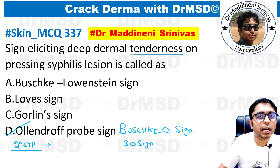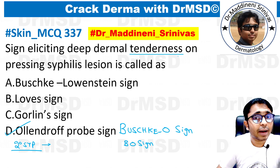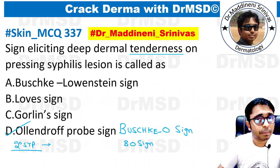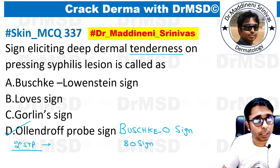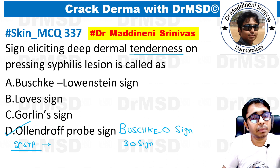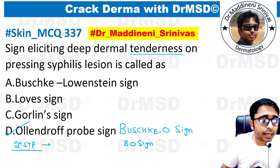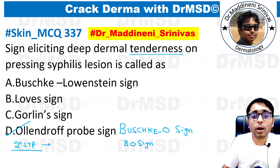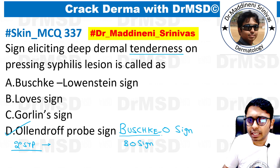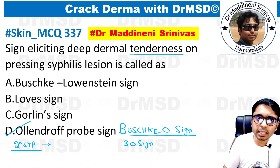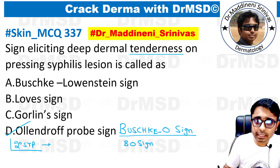This is basically due to the underlying vasculitis happening beneath these lesions due to Treponema pallidum, and this is precisely called as Buschke-Olendorff sign. It is very important in the identification of patients with secondary syphilis.